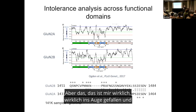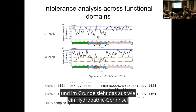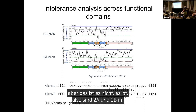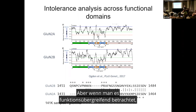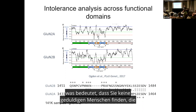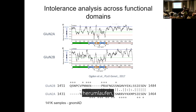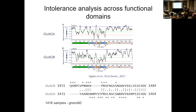This really caught my eye when it came out a few years ago. This looks like a hydropathy plot, but it's not. GluN2A and GluN2B are intolerant on average compared to other genes. But if you look across functional domains, there are certain places where intolerance crashes to zero — for example, in the transmembrane domains you don't find patients walking around with variants there. That makes sense, because you wouldn't want a variant that would be catastrophic for the receptor to even oligomerize to get to the surface.